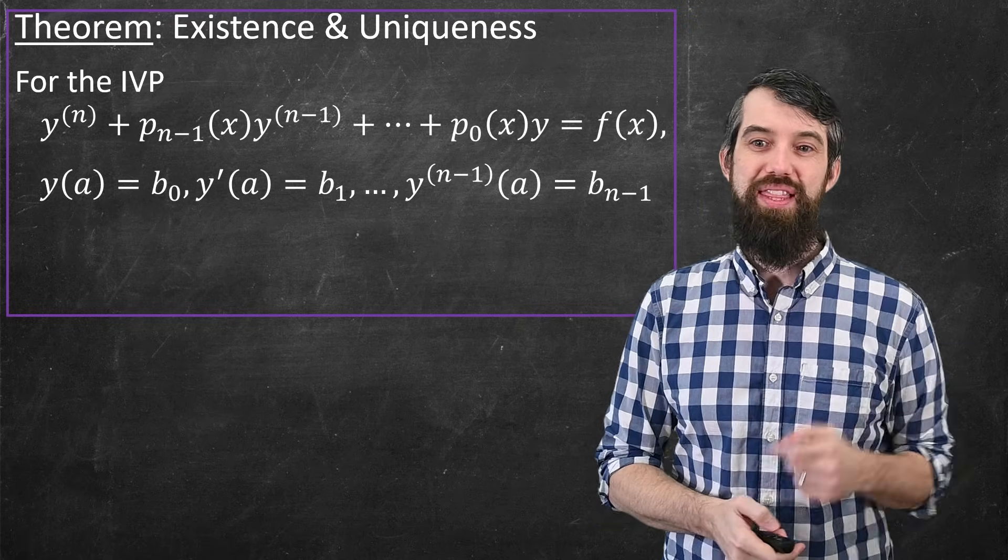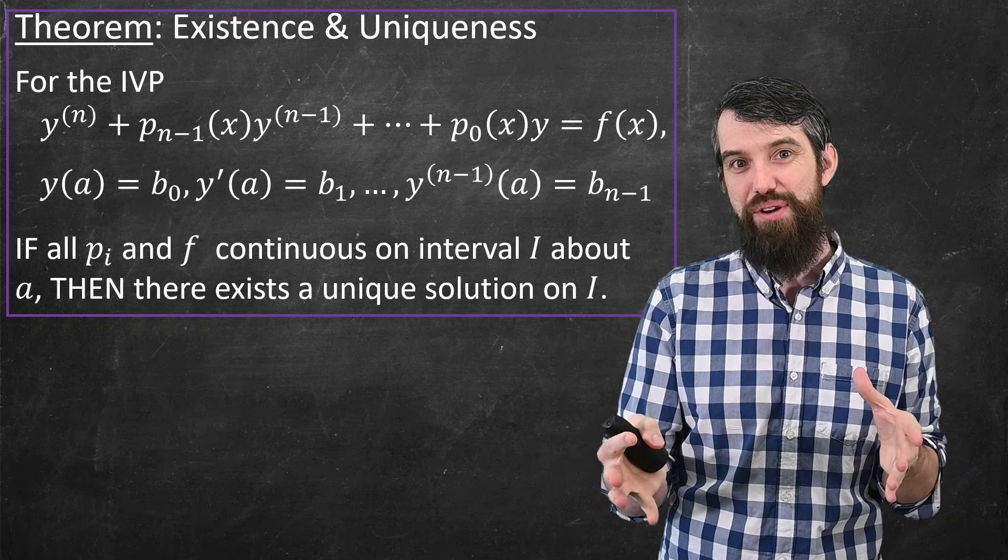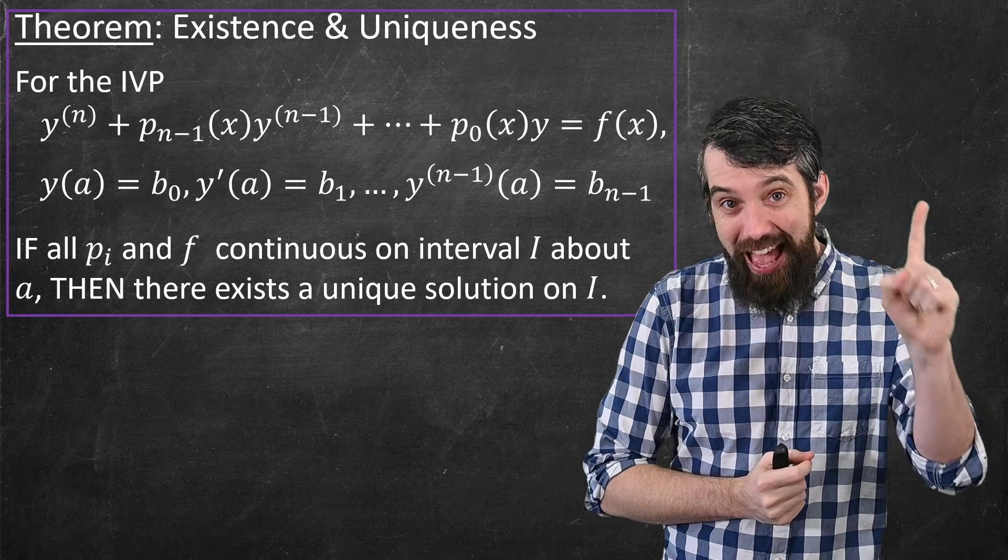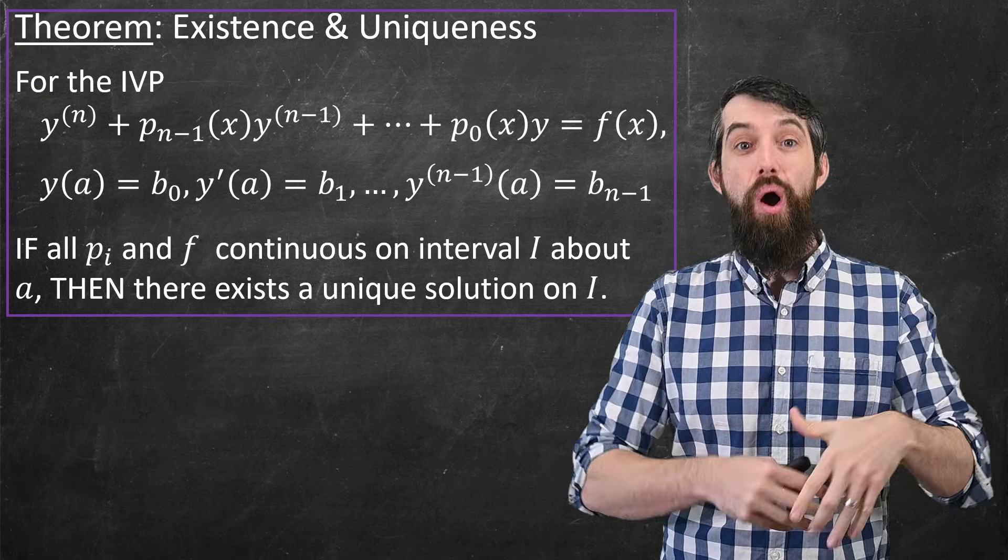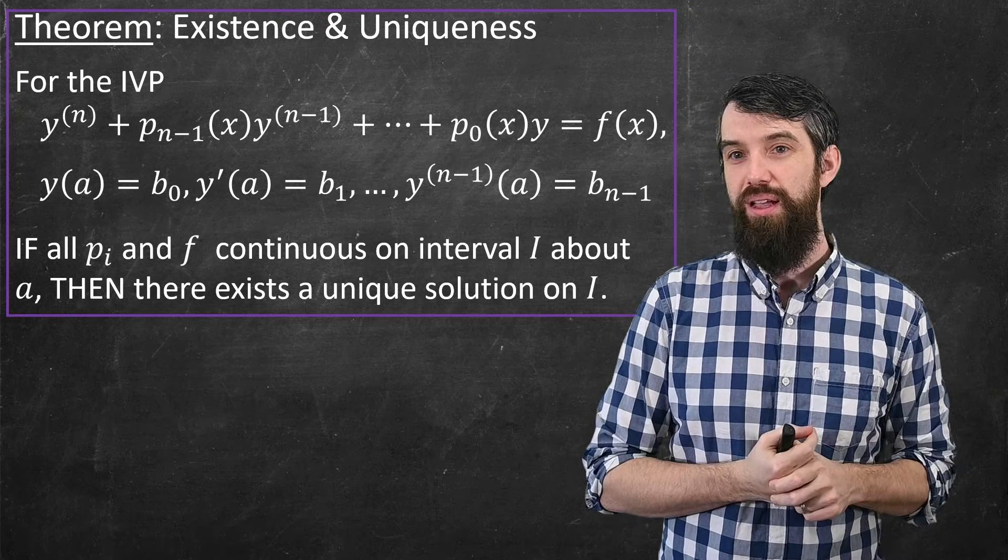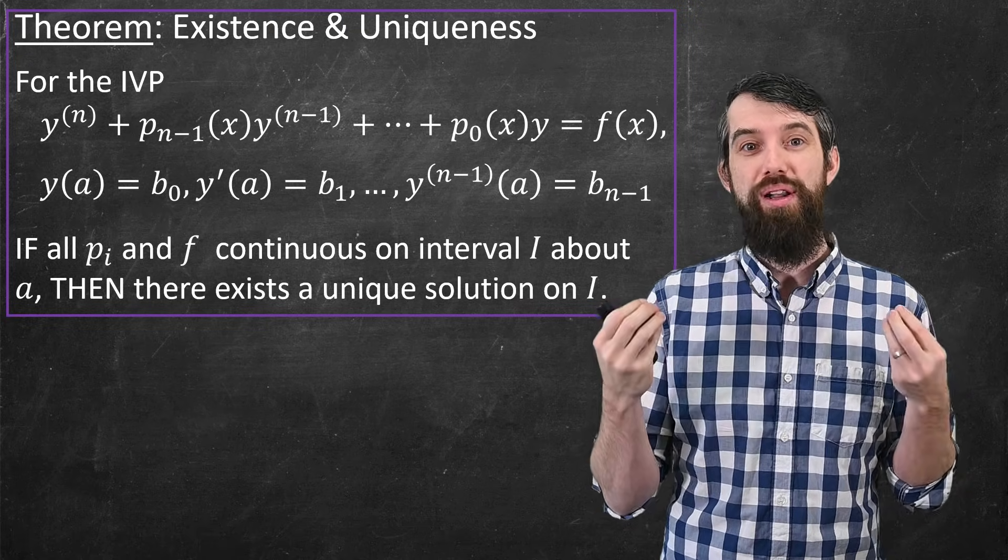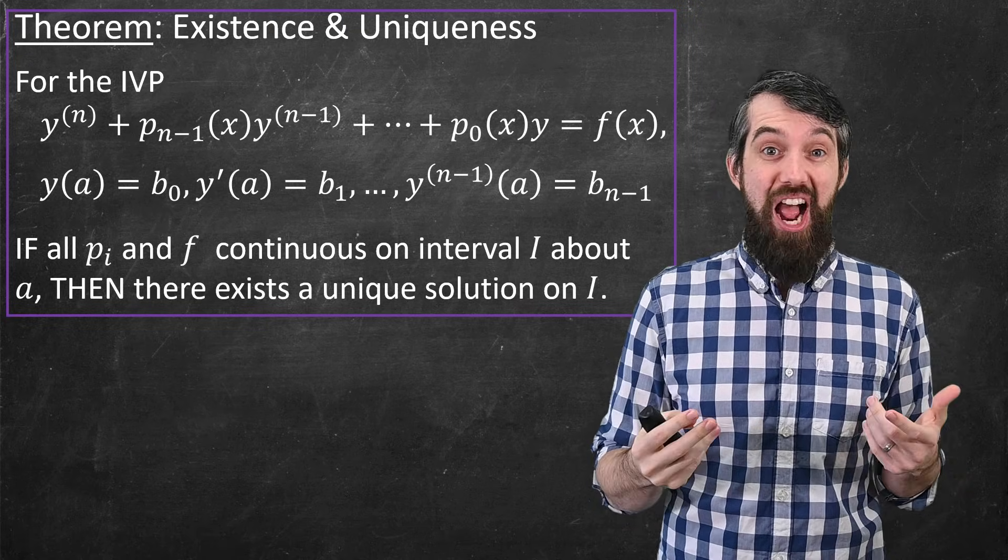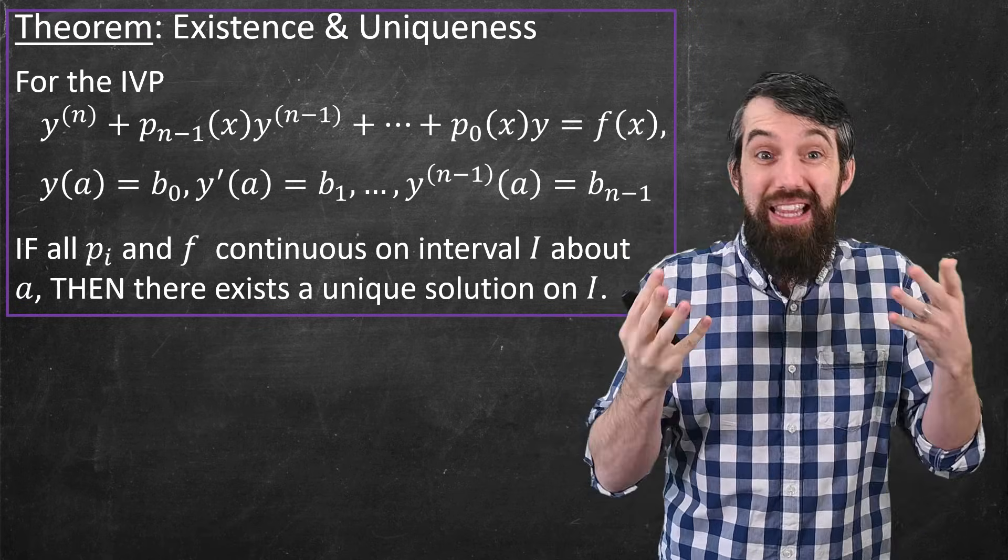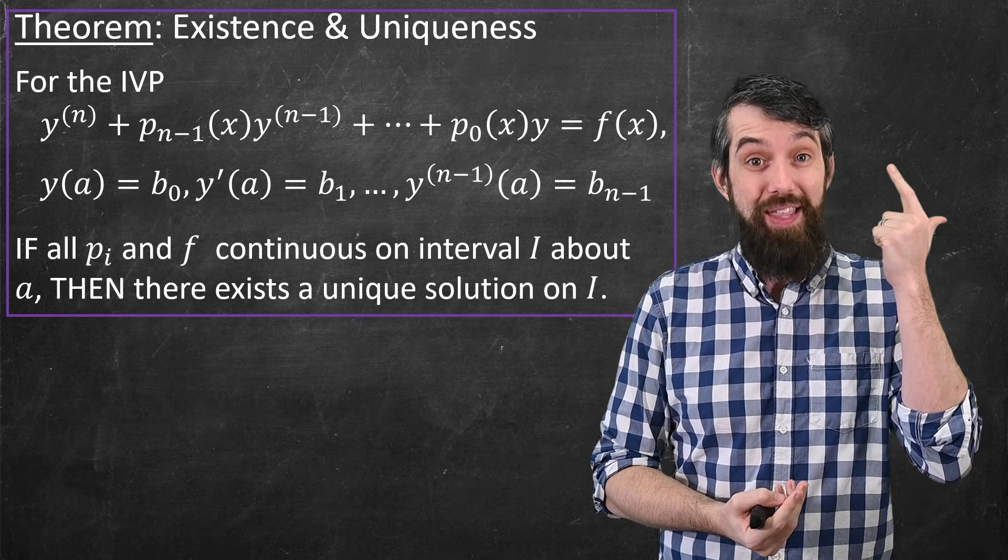Then, provided everything is nice, like the coefficient functions the pi and the f are continuous on some interval, then the existence and uniqueness theorem guarantees that yes there exists a solution, and that solution is unique on the entire interval where your coefficient functions and your f are nice. So we have this pretty strong existence and uniqueness theorem that's true for higher order linear differential equations like this one. And indeed, other than jumping up to n initial conditions and nth order differential equation, this is really the same thing that we've seen now three times. We saw it in the first order, we saw it in the second order, and we saw it now in the nth order.